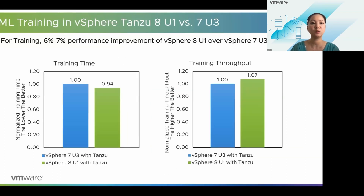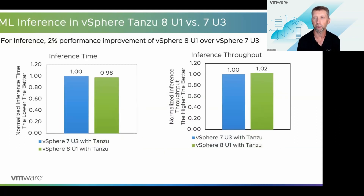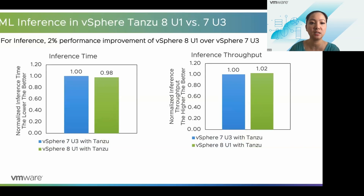We also did a comparison with vSphere 7 to see the differences. For the Mask-RCNN training workload, vSphere 8 delivers 6-7% better performance in terms of both training time and throughput — lower training time is better, and higher throughput is better. That's a really nice performance improvement just from an upgrade. With the upgrade, we see a slight performance improvement, and it's worth noting the difference comes not just from vSphere but also from upgrading NVIDIA drivers — the benefit of both newer drivers and newer vSphere. For inference, we see about a 2% improvement in both inference time and throughput.